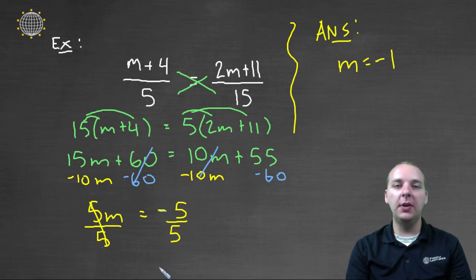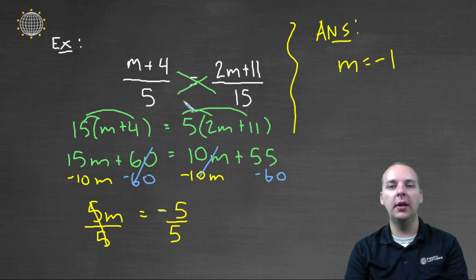If we have an extra minute, we can go back and check this, and I think we do, let's go ahead and verify this real quick. We should be able to plug in negative one for m, and these two ratios should be equal. Let's try it.